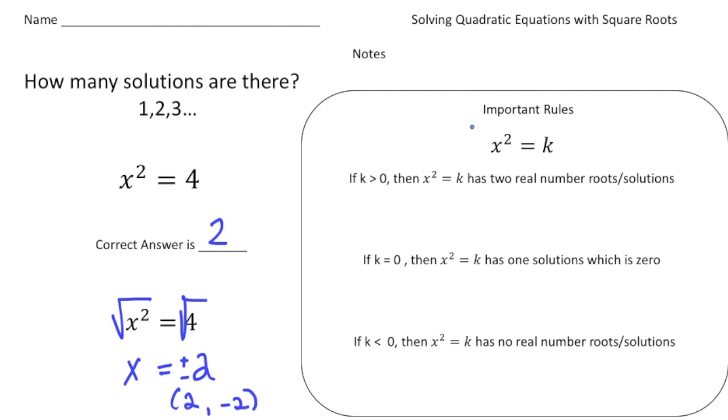So take a look at this next box and it goes over kind of the important rules when it comes to square roots. So here we have x squared equals k and k is going to be some value. And the rule is when k is greater than zero then there's gonna be two roots or solutions for x. So let's say for example we have x squared equals nine. Well nine of course is greater than zero. So we could have a solution of x is three or x equals negative three. There's two solutions.